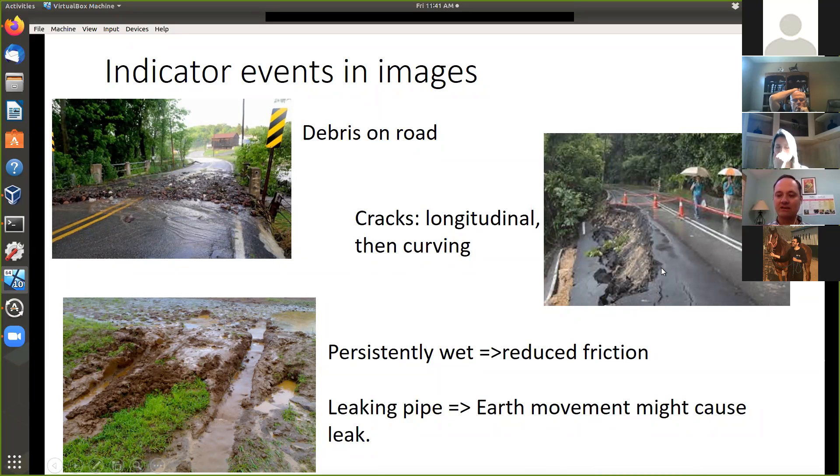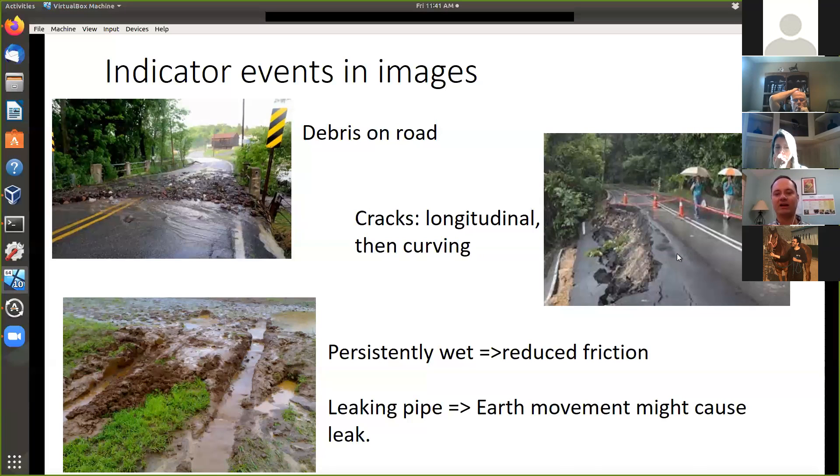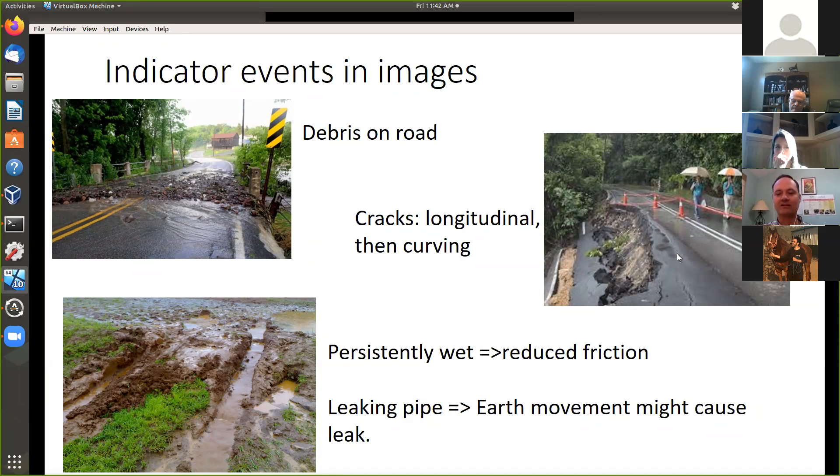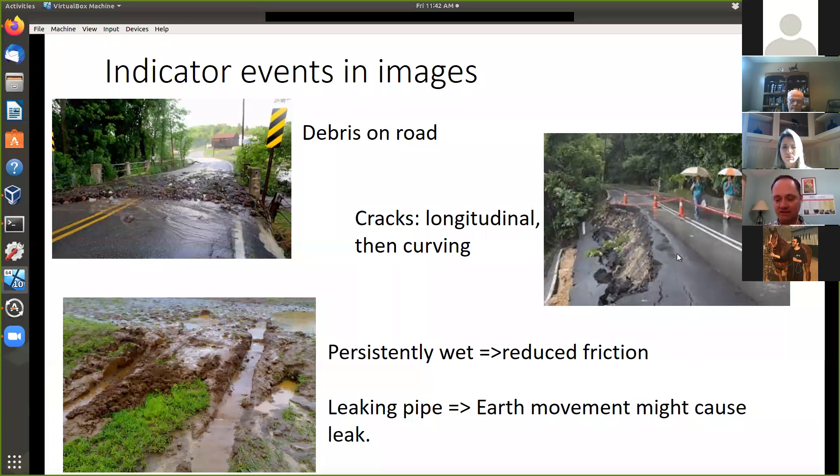In this case, it already failed. But what usually happens is you first get a longitudinal crack. When it gets really bad, it curves. Once it has curved, then it will fall. So if you can find these longitudinal cracks, it indicates something is going on. When it starts curving, then it's really important. We want to collect enough data so we can train those neural nets to detect these things.